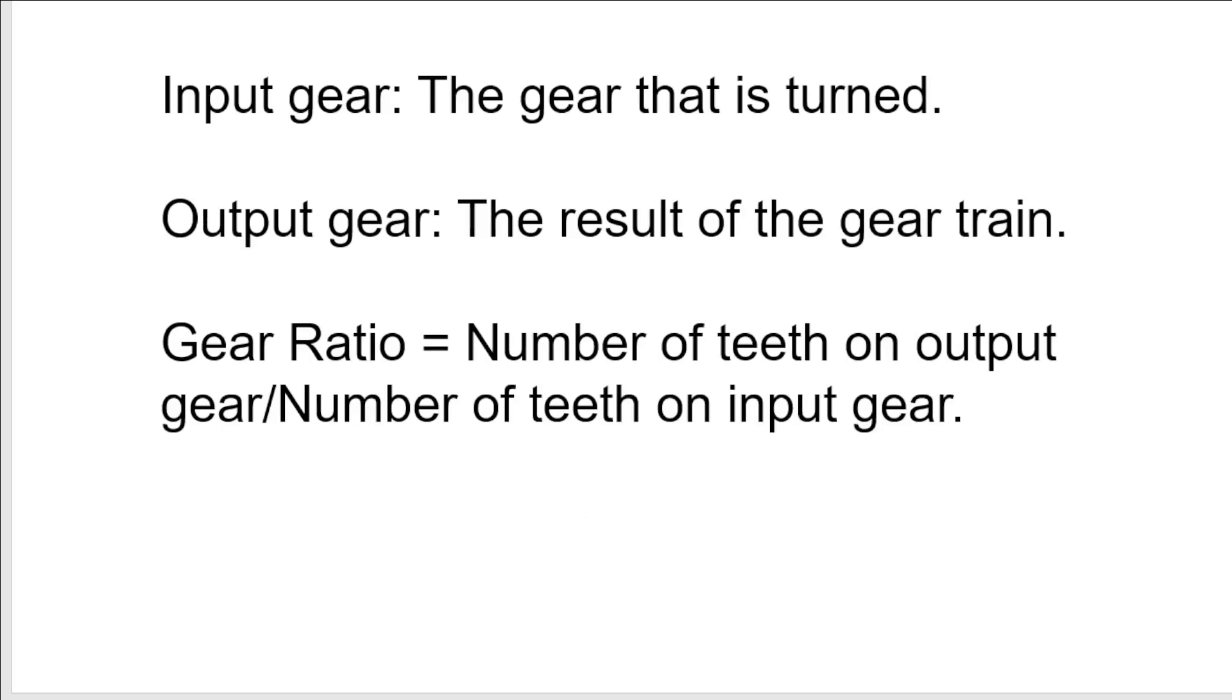We have some definitions here. The input gear is the gear that is turned, which in most cases would be the motor turning it. The output gear is the result of the gear train, and the gear ratio is the number of teeth on the output gear divided by the number of teeth on the input gear. That is a very important concept because we'll be looking at speed and torque, and if you do not understand gear ratio, you're not going to understand any of that. Make sure it's output divided by input.